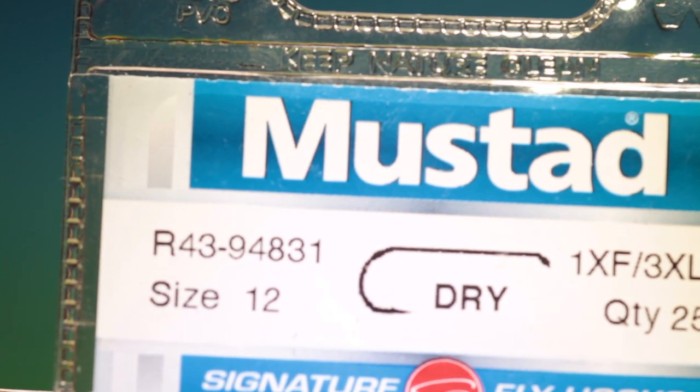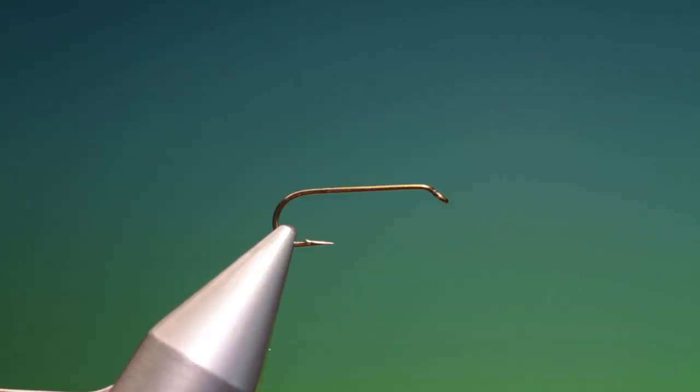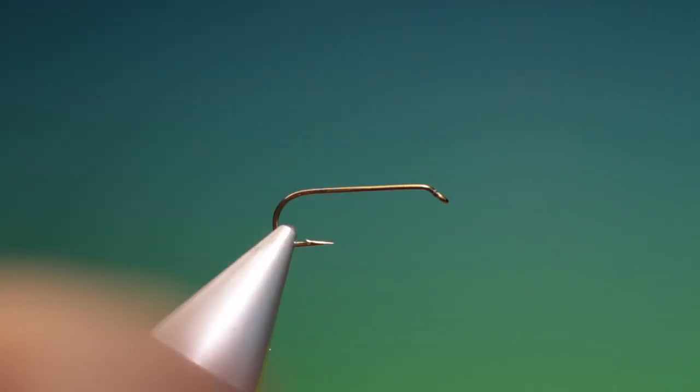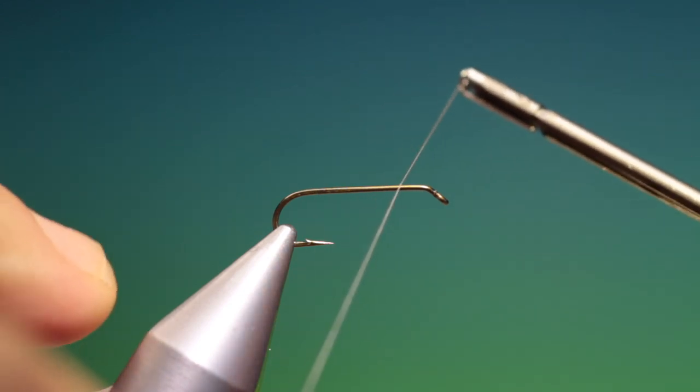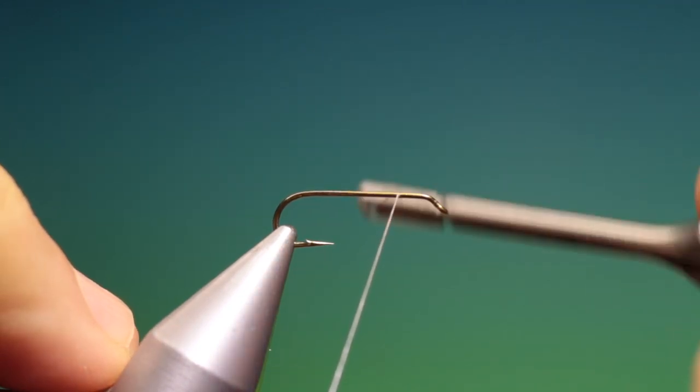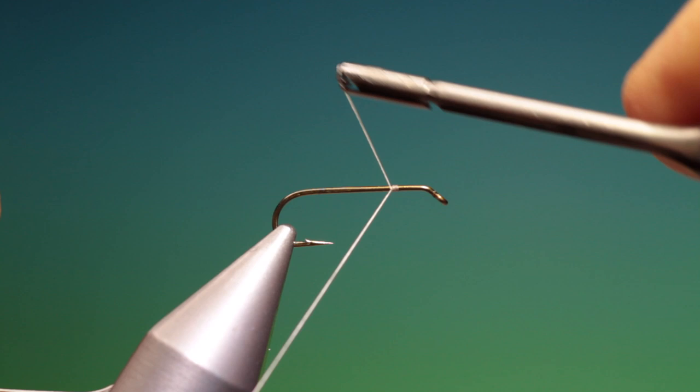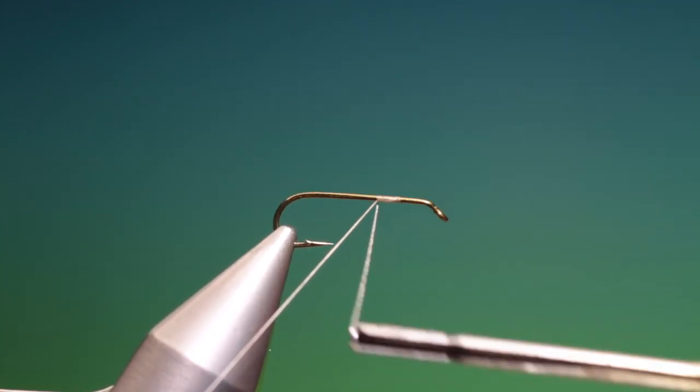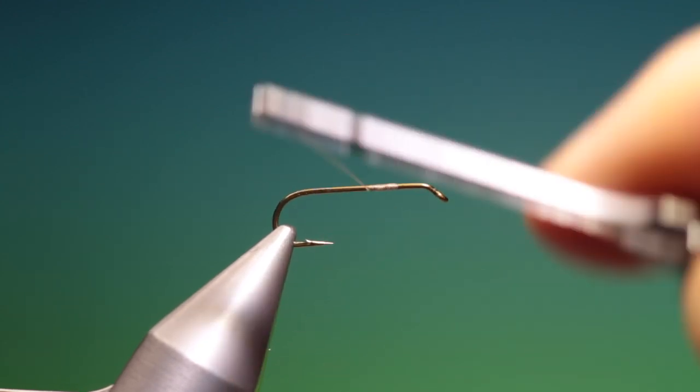We'll start with the Mustad R43 size 12 dry fly hook. I have some Shear 14-0 tan, I'll just attach this here and go back, remove that.